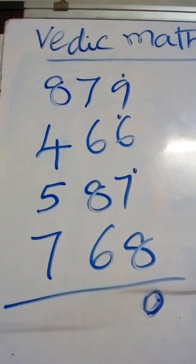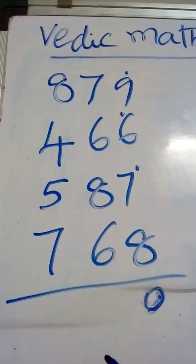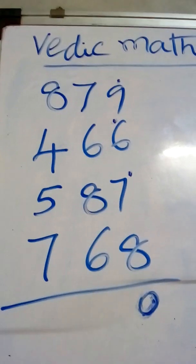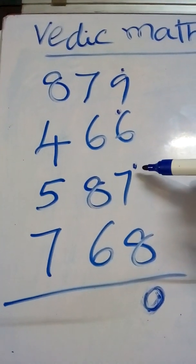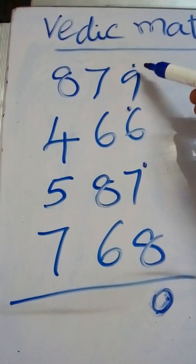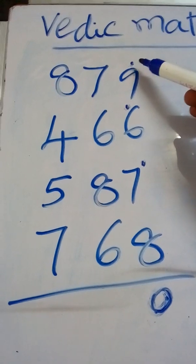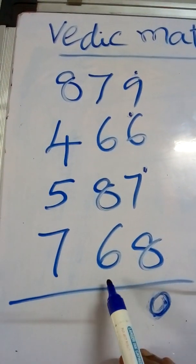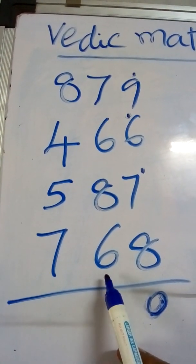Now, before going to the 10th place, we have to check how many dots are there in 1's position. 1, 2, 3. 3 dots means 3. We have to add with 6. 3 plus 6 is equal to 9.